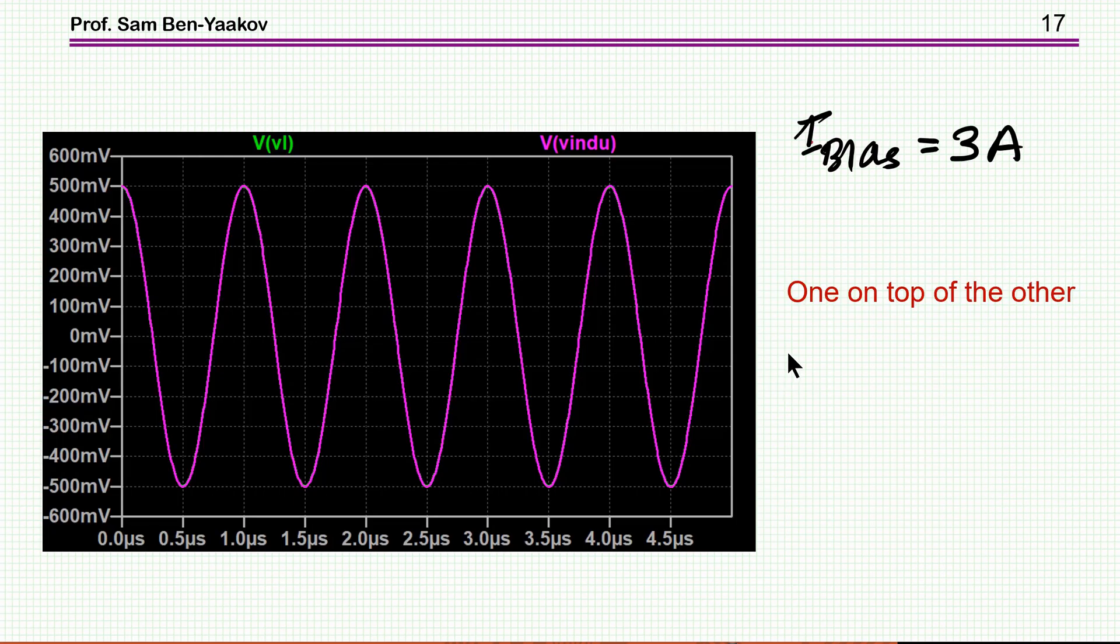For a bias current, DC bias current of 3 amps, I've just put one on top of the other. You'll see that they are exactly the same. They're getting the 0.5 volt as we've seen before.